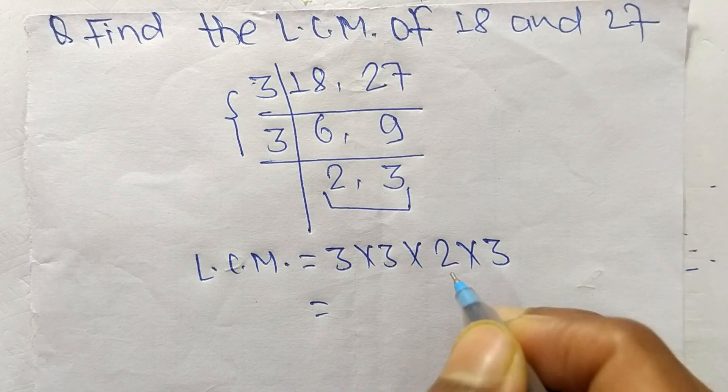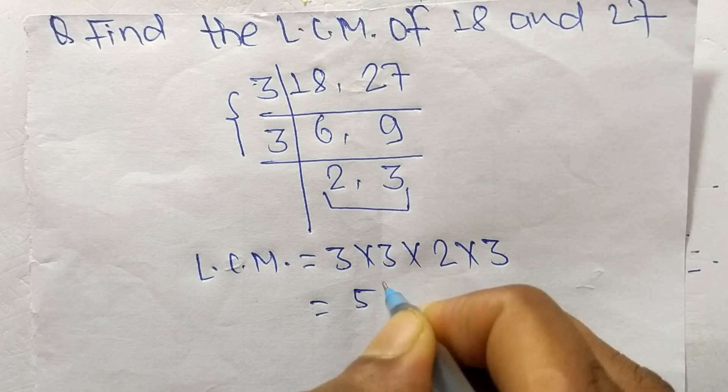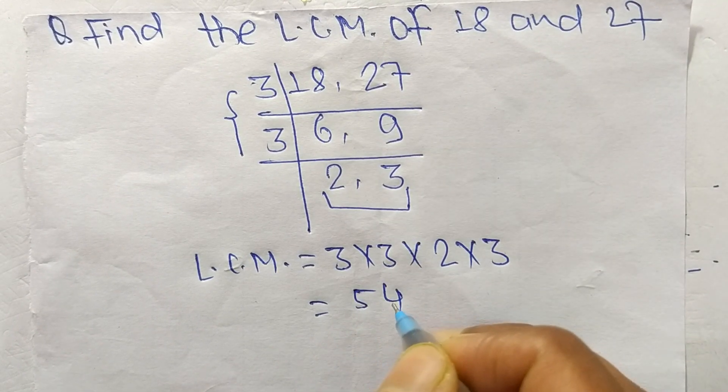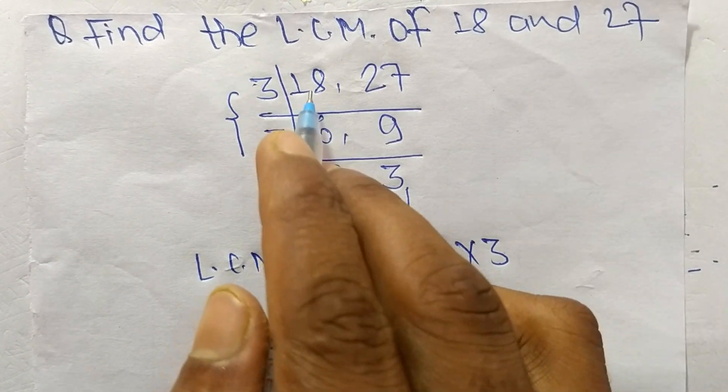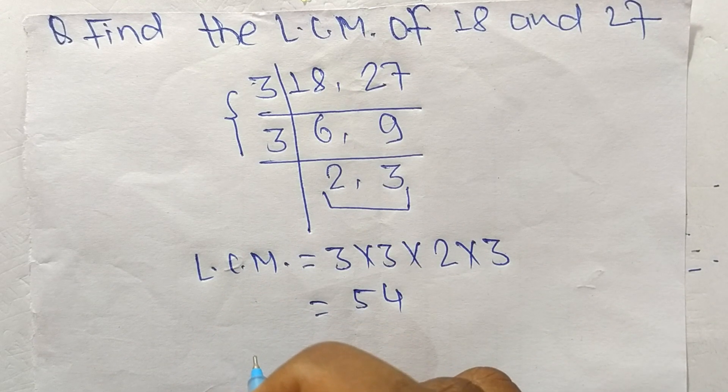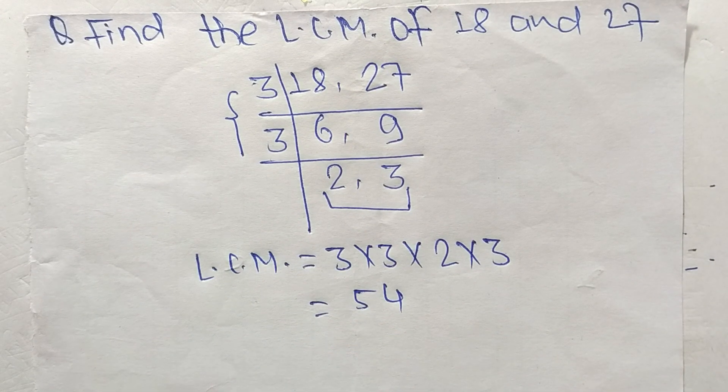9 times 2 equals 18, and 18 times 3 equals 54. So 54 is the LCM of 18 and 27. So this much for today and thanks for watching.